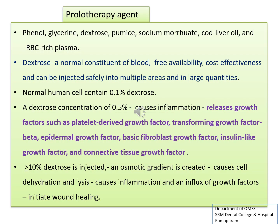Various proliferant solutions reported in the literature include phenol, glycerin, dextrose, etc. Dextrose is the commonly used solution as it is a normal constituent of blood and can be injected safely into multiple areas. A dextrose concentration of 0.5% causes inflammation, which releases various growth factors such as platelet-derived growth factor, transforming growth factor beta, and epidermal growth factor. When hypertonic dextrose — that is, greater than 10% — is injected, it creates an osmotic gradient which causes cell dehydration and lysis, which in turn leads to inflammation and influx of growth factors that initiates healing.